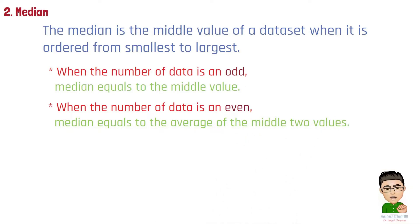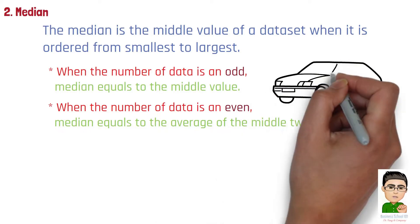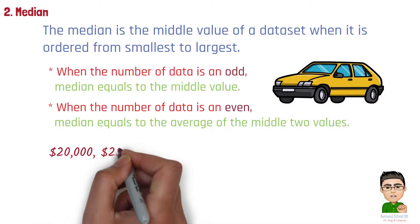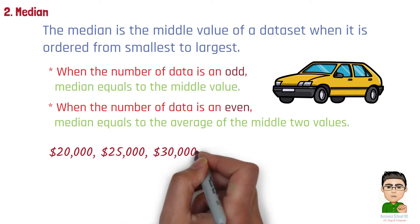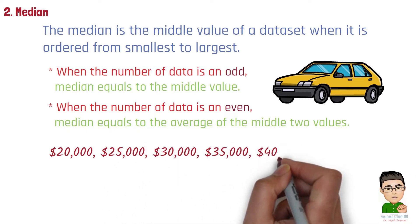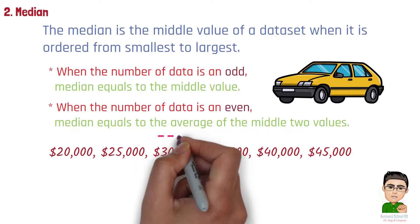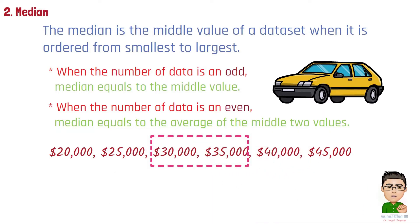For example, a car dealership wants to know the median price of the cars they sold last month. Here are the prices: $20,000, $25,000, $30,000, $35,000, $40,000, and $45,000. In this case, it has six sales numbers which is even, so the median equals the average of the middle two numbers. So, the median price of the cars sold is $32,500.